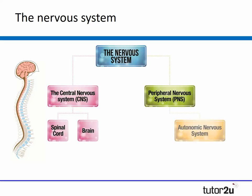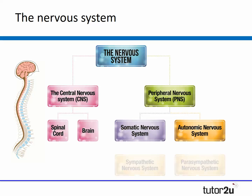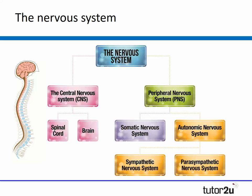The peripheral nervous system consists of two separate subsystems: the autonomic nervous system and the somatic nervous system. To make matters even more complex, the autonomic system is divided into two further subsystems: the sympathetic nervous system and the parasympathetic nervous system. We're going to explore the role of each of these components during the course of this short topic video.